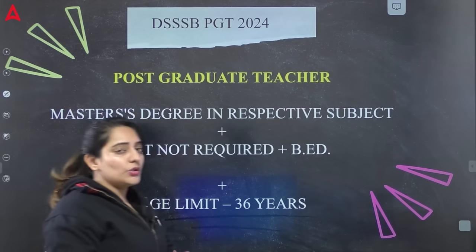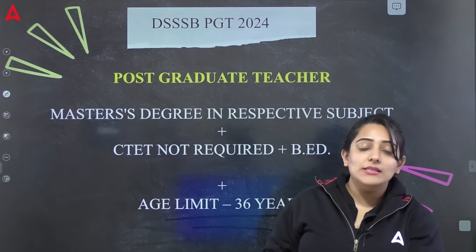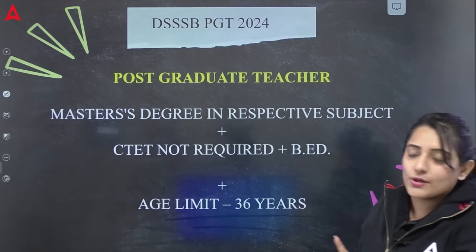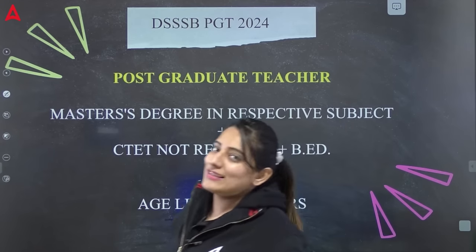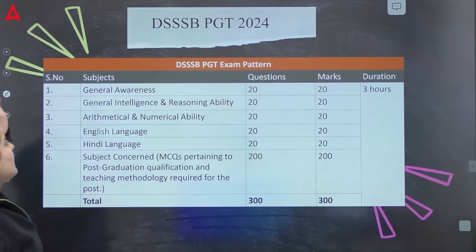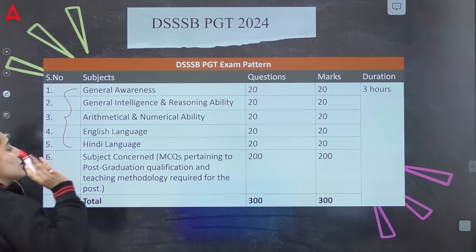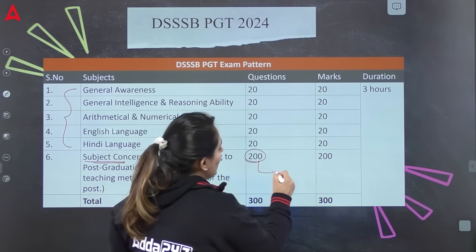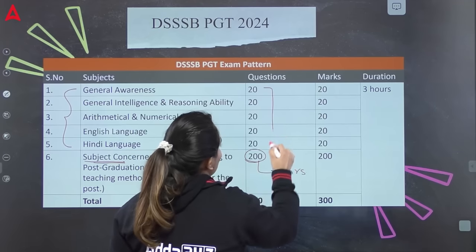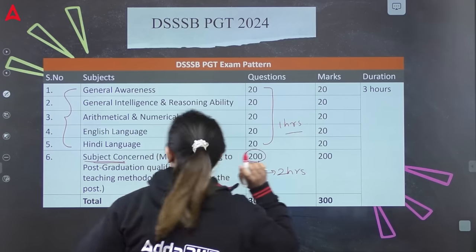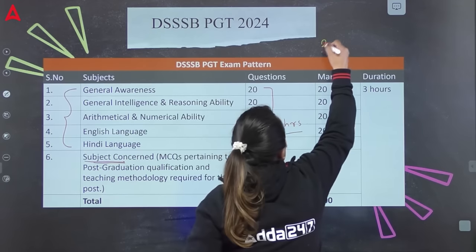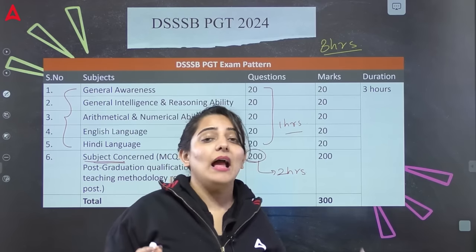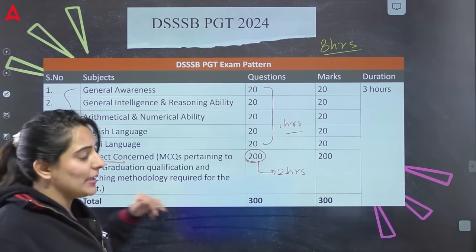अगर PGT की बात करें तो यहाँ changes दिखाई देते हैं। PGT में respective subject में Master's degree चाहिए। CTET जरूरी नहीं है, लेकिन B.Ed जरूरी है। Age limit 36 years तक apply कर सकते हैं। Exam pattern में भी change है: Paper 1 same रहता है, लेकिन Paper 2 जो subject-concerned होता है वो 200 number का होता है और उसके लिए अकेले 2 घंटे दिए जाते हैं। Total 3 hours का paper होता है और 300 number का। हर post पर प्रति question एक minute दिया जा रहा है as per the time limit।